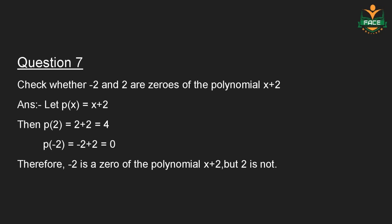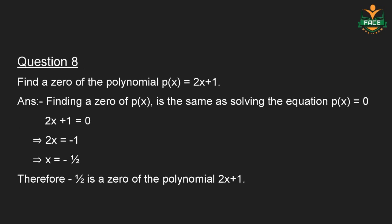Question number 8: Find a zero of the polynomial P(x) is equal to 2x plus 1. Finding a zero of P(x) is the same as solving the equation P(x) equal to 0. So 2x plus 1 is equal to 0, which implies 2x is equal to minus 1, which implies x is equal to minus 1 by 2. Therefore, minus 1 by 2 is a zero of the polynomial 2x plus 1.